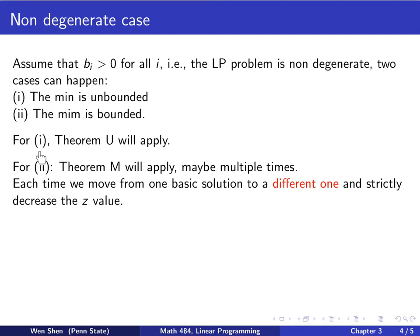For case one, if the minimum is unbounded, then at some point Theorem U will apply, and the criterion will be satisfied, and you will conclude and stop the algorithm.